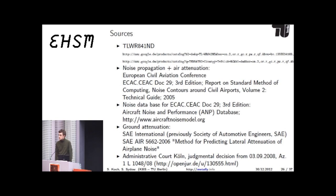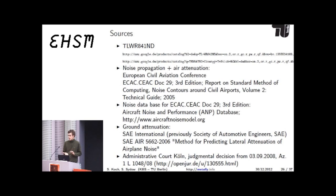Another question from IRC: how precise is the position sent? Could it be used by terrorists to attack airplanes? The aircraft specifies in a bit field how precise its position is — usually we talk about some hundreds of meters, but we see that positions are in most cases actually precise to about ten meters. And if you really have bad intentions, you won't need an ADS-B receiver to get the position of an aircraft.